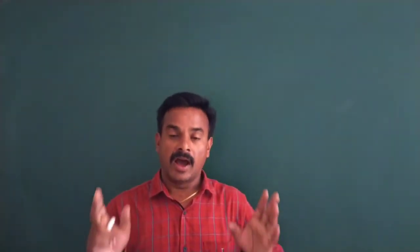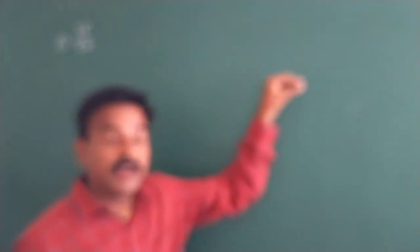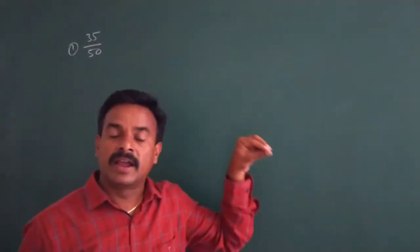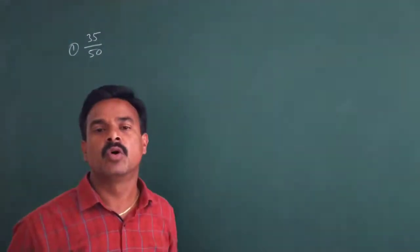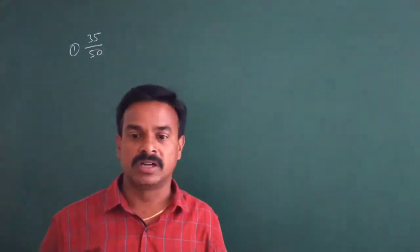What is our topic? Finding decimal form of a fractional number which is in the form of P by Q without doing actual division. I am taking one example, that is 35 by 50. We can find the decimal form of this fractional number 35 by 50 by dividing 35 by 50, but it takes much more time. So we are using another method now.